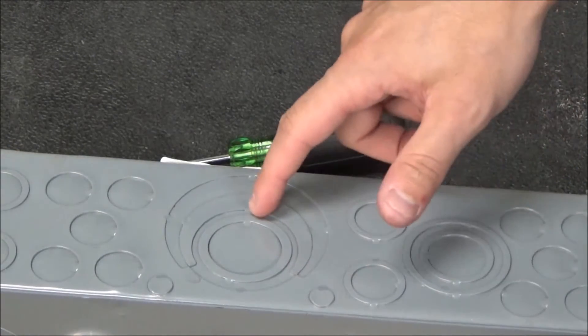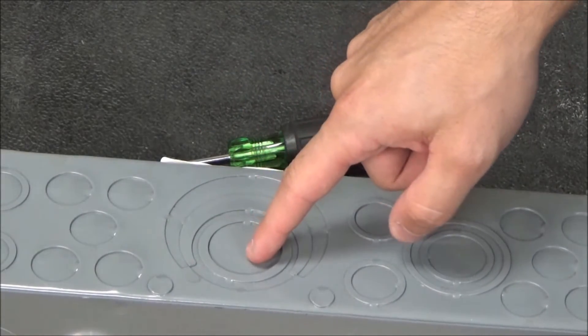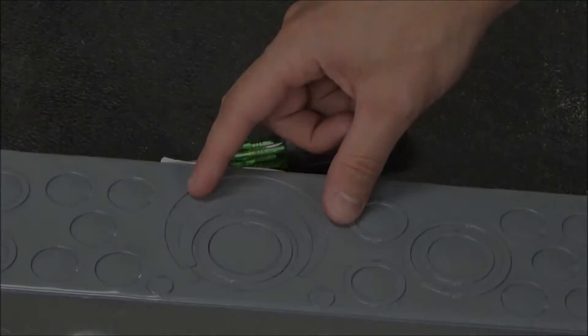With the knockouts, when you are removing them, you always start with the smallest knockout first and work your way outwards.